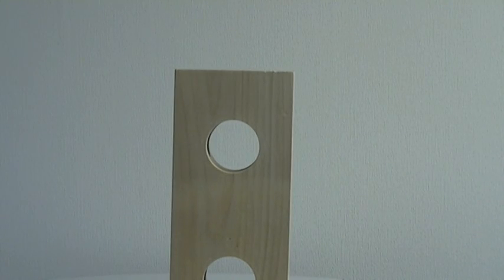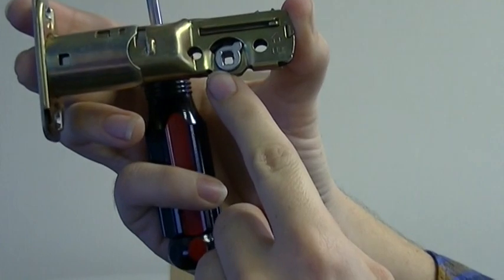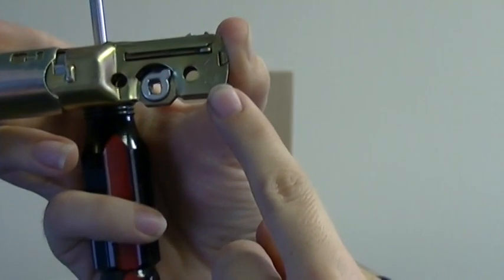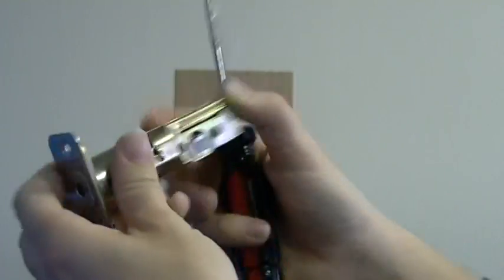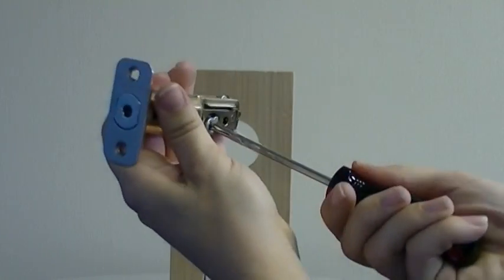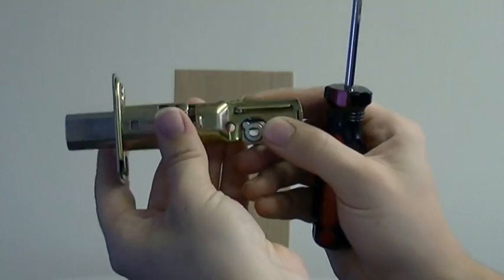After you have found the center of the hole, use a screwdriver to turn this piece to the left, making sure that you are holding the latch so that the arrow is facing up. As you turn this piece to the left, the deadbolt will extend out.